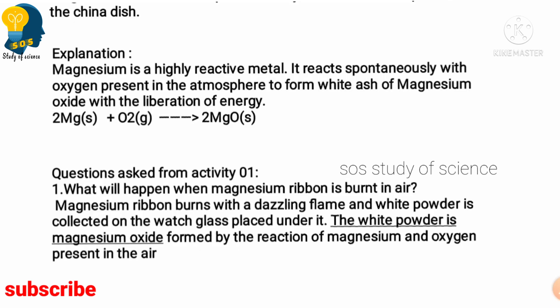When magnesium ribbon is burnt, it will form a white dazzling flame and also a white powder is collected on the watch glass. That is what exactly you want to write in the examination. This white powder is actually the magnesium oxide which is formed by the reaction of magnesium and oxygen.